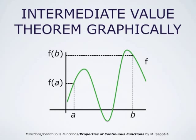We may view the intermediate value theorem graphically. The function f takes value f(a) at point a and value f(b) at point b, with f(b) larger than f(a). Given a value t between f(a) and f(b), we find the point c by drawing a horizontal line and looking at where it intersects the graph of the function. The graph may intersect at several points; we may choose any of these as our point c, such that f(c) equals t.